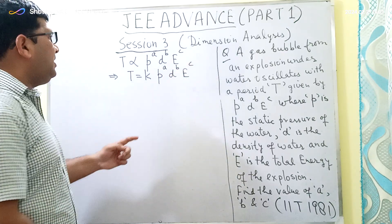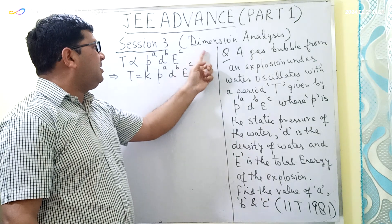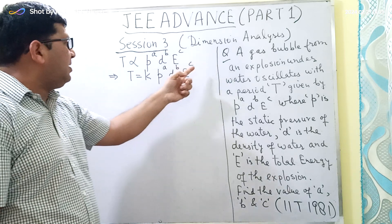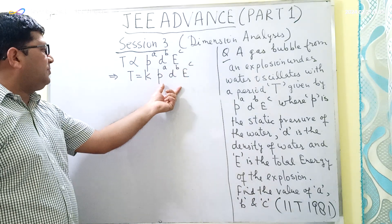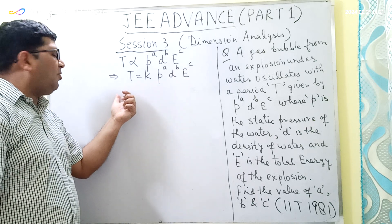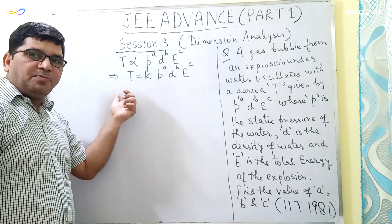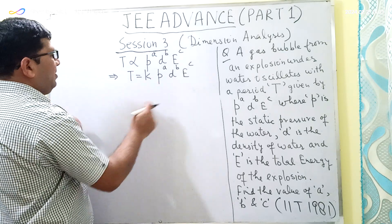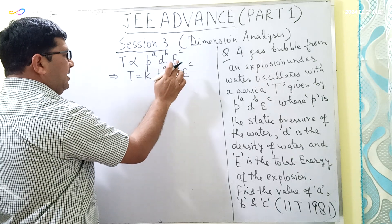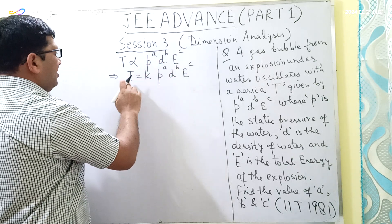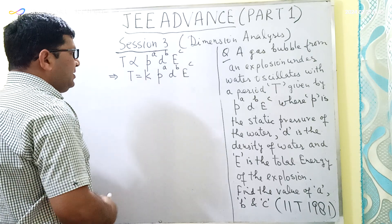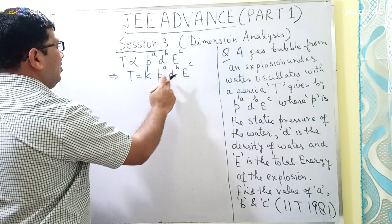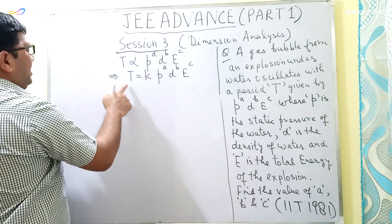As per the principle of homogeneity, which we have studied in the topic of dimensional analysis in the chapter of units and measurement, the dimensions of all terms on the right-hand side and left-hand side of an equation should be equal if the equation is correct and homogeneous. So here we will find the dimensions of pressure, density, total energy, and period, and then use the principle of homogeneity to find the values of A, B, and C.